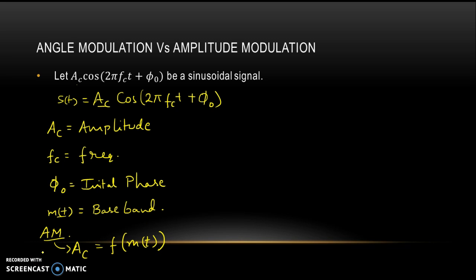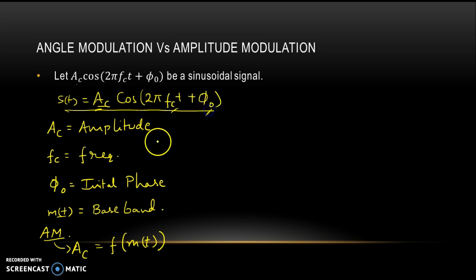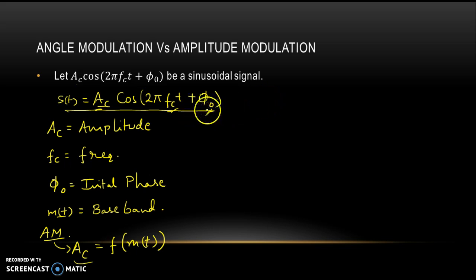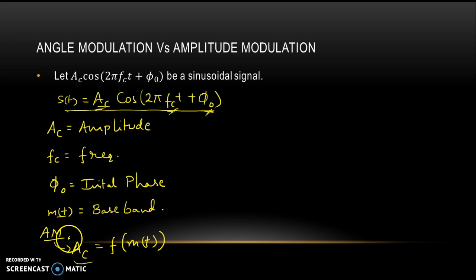We modulate the amplitude of the carrier signal with the message signal — the baseband signal — so that we can transmit our signal easily. Observing this signal, we have three different things: the amplitude, the frequency f, and the phase. When transmitting a baseband signal using this carrier signal, we have simply modified the amplitude. But we have two more parameters which can also be modified.